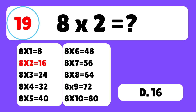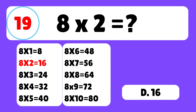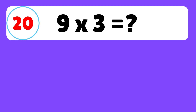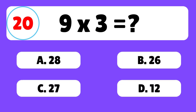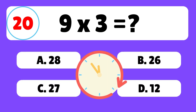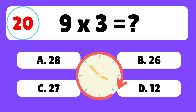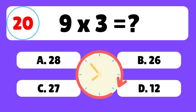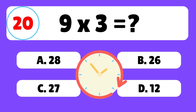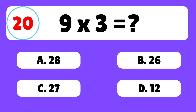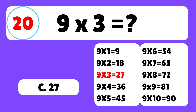Question 20. What is 9 times 3? The answer is C. 9 times 3 is equal to 27.